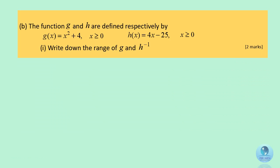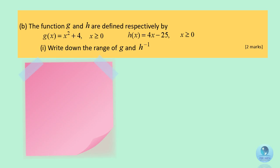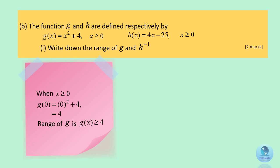From the given domain, when x is greater or equal to 0, it is the minimum point for the function g(x). Hence, we substitute 0 into the function and we get 4, so the range for the function g is greater or equal to 4.